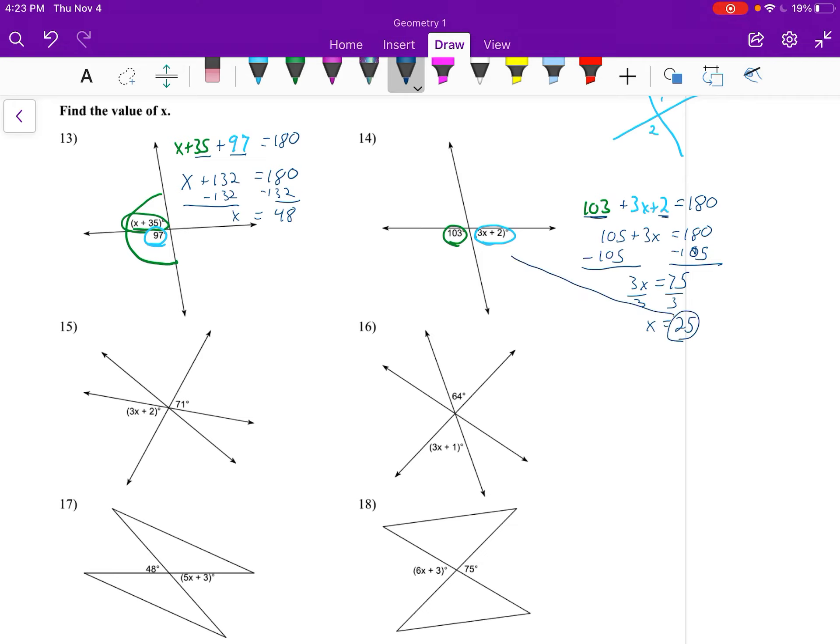Dividing both sides by 3 gives us x equals 25. As a reminder, if you want to check, you can put that number back in for x. 3 times 25 is 75 plus 2, that is 77. Do 103 and 77 add up to equal 180? Yes they do, so x equals 25 is correct.